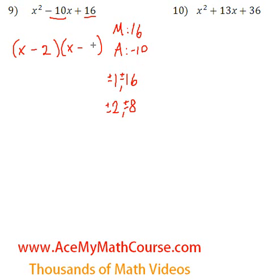So, we have x minus 2 times x minus 8. Excellent. Okay, how about x squared plus 13x plus 36.